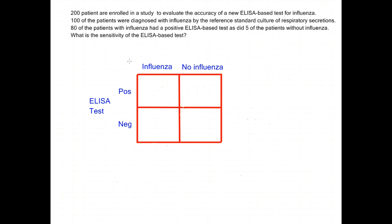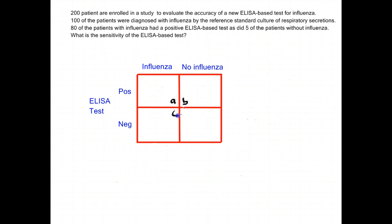I want to determine the sensitivity of this new ELISA-based test. The first thing I'm going to do is fill in my two-by-two table. A two-by-two table is a pretty standard way we make calculations from studies. By convention, disease status is across the top, as determined by our reference standard. Across the side is our new test results, whether they be positive or negative. I'm going to label each of these boxes with a letter that we'll use later for the formula for sensitivity.